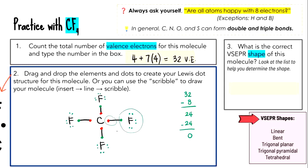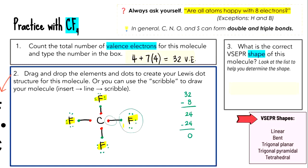What is the correct VSEPR shape of CF4? Looking at how many outside atoms it has: one, two, three, four. The shape that indicates four outside atoms is tetrahedral.